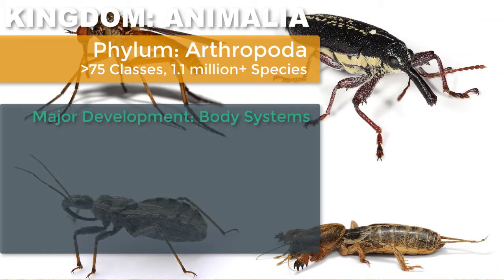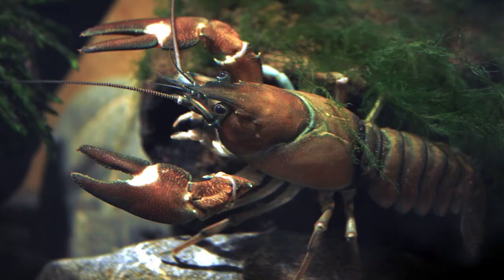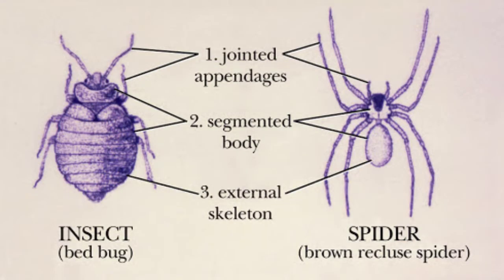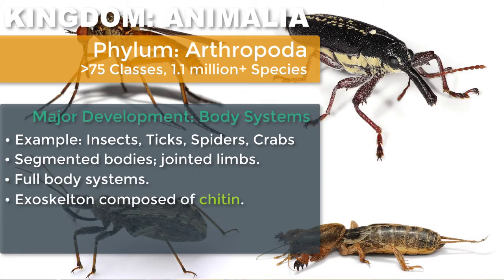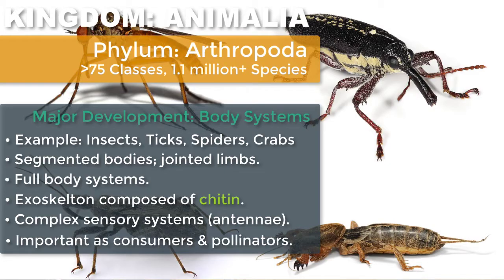The final grouping of protostomes is the largest — not only of the protostomes, but of all the animal kingdom as well — and those are the arthropods. Arthropods are extremely diverse: insects, spiders, ticks, scorpions, shrimp, lobsters, crayfish, crabs — anything that has a segmented body with jointed appendages and an exoskeleton. These exoskeletons are composed of chitin, which you may recognize as a component of the cell wall of fungi. They have very complex sensory systems, seen through antennae in many of these organisms, as well as complete digestive, excretory, and circulatory systems. They are extremely diverse in appearance and function, but most play very important roles as primary consumers in aquatic and terrestrial ecosystems. I've already talked about the importance of pollinators, of which insects are an extremely important subgroup.